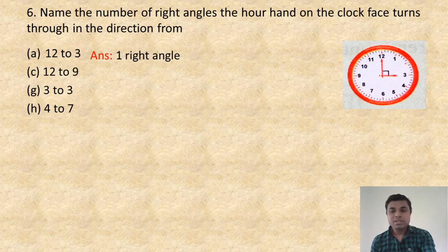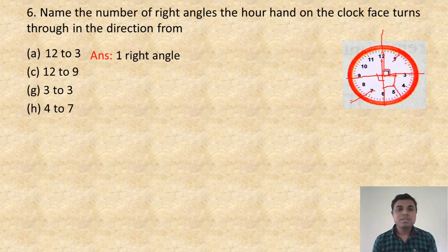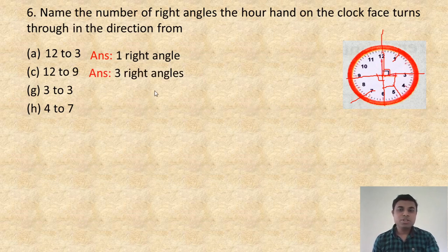Now 12 to 9: 12 is the initial position. As it rotates from 12 to 9, counting the quarter divisions — 1, 2, 3. So the answer is 3 right angles. Next, 3 to 3 — that means a complete rotation, and as we learned, a complete rotation means 4 right angles. Write 4 right angles.